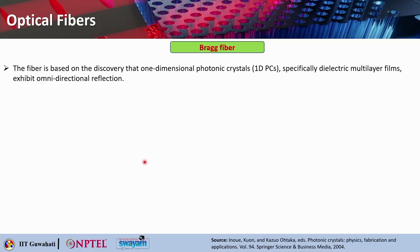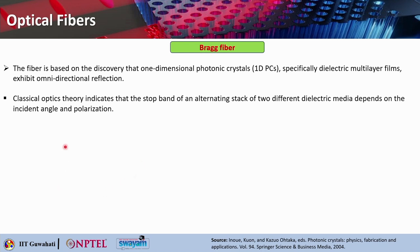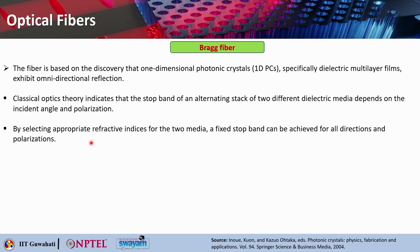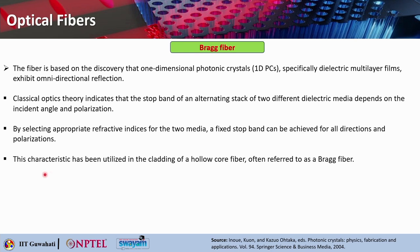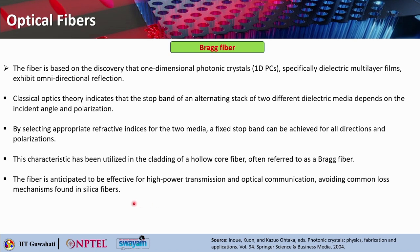Coming to the last type — the Bragg fiber. This fiber is based on the discovery that one-dimensional photonic crystals, which are dielectric multi-layer films, can exhibit omnidirectional reflection. While classical optics theory indicates the stop band of an alternating stack of two different dielectric media depends on incident angle and polarization, selecting appropriate refractive indices of the two media allows a fixed stop band for all directions and both polarizations — becoming an omnidirectional reflector. This characteristic can be utilized as a cladding of a hollow core fiber, known as the Bragg fiber. It is anticipated to be more effective for high power transmission and optical communication, avoiding common loss mechanisms found in silica fibers.